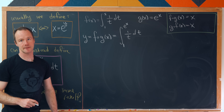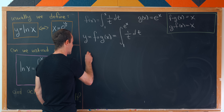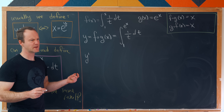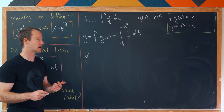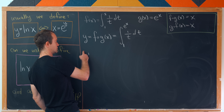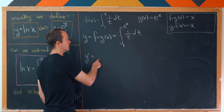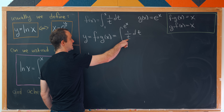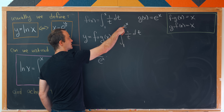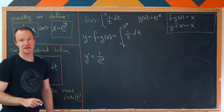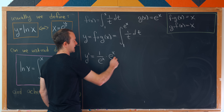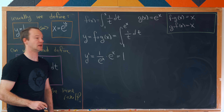Now let's take the derivative using two tools: the fact that the derivative of e^x is itself, and the Fundamental Theorem of Calculus Part 2. So dy/dx equals 1/t evaluated at e^x, which is 1/e^x, multiplied by the derivative of e^x because we have a composition. That gives us 1/e^x times e^x, which is clearly equal to 1.